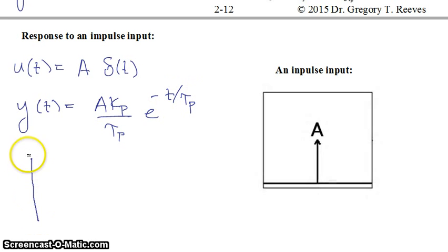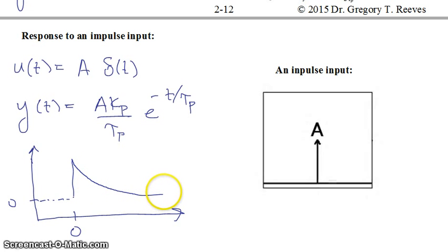And this would look like in time, here's time t equals zero when the impulse happens, here's a zero value which y was originally, then all of a sudden at time t equals zero this infinitely strong spike input with amplitude a causes your y of t to jump up like that and then it decays back exponentially back to zero.